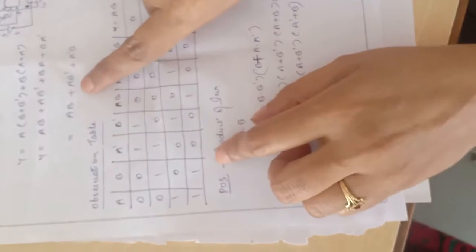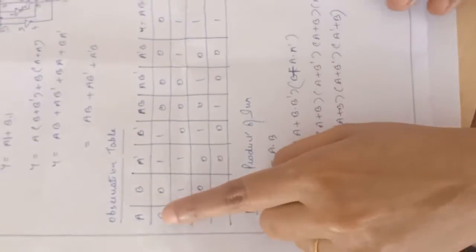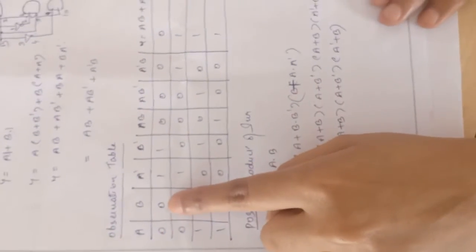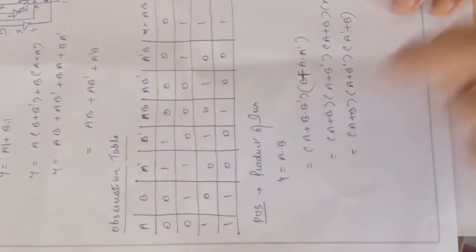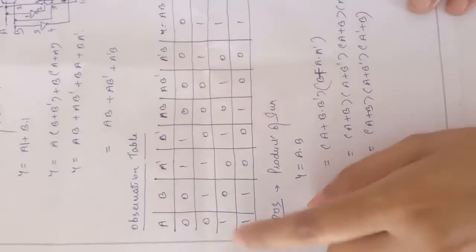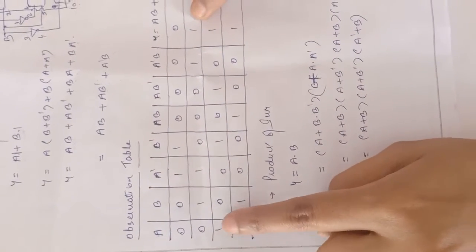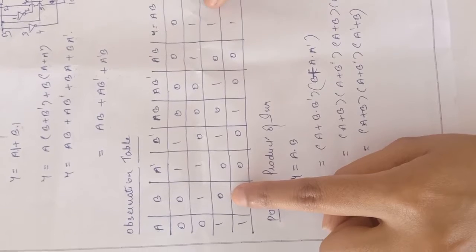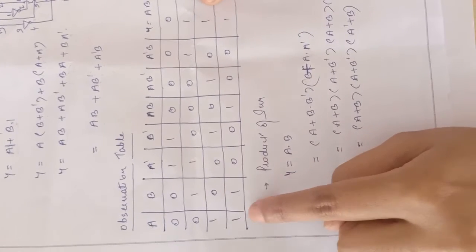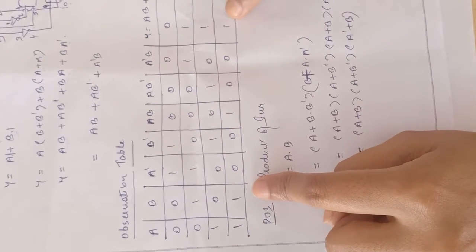This is the truth table of SOP. For input combination 0,0 we will have output 0. For 0,1 we will have output 1. For 1,0 we will have output 1. And for 1,1 we will have output 1.